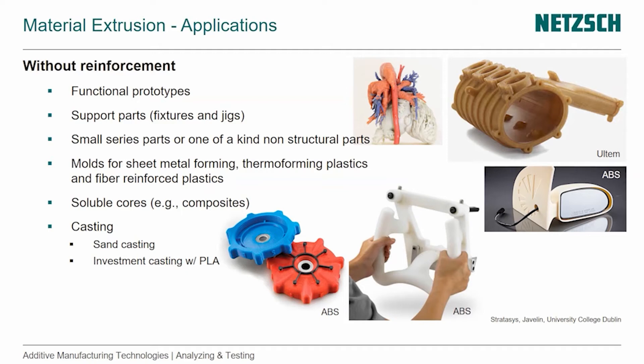Looking at applications without reinforcement, there's a big variety. You can produce functional prototypes, support parts, fixtures and jigs — for example, a tool held with two hands to pick up a part and position it in the correct location. Small series or one-of-a-kind non-structural parts, like a mirror gimmick, are also possible. You can use it to make molds for sheet metal forming, thermoforming plastics, and even fiber-reinforced plastics.